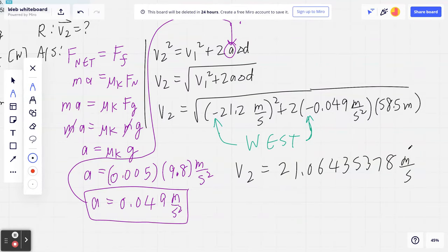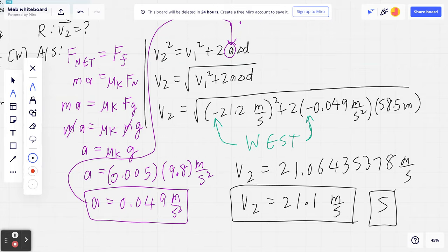Now remember, you can go back to sig figs. In this case, V2 is approximately 21.1 meters per second. You can write down that final statement. Therefore, the speed of the puck after traveling 58.5 meters is approximately 21.1 meters per second.